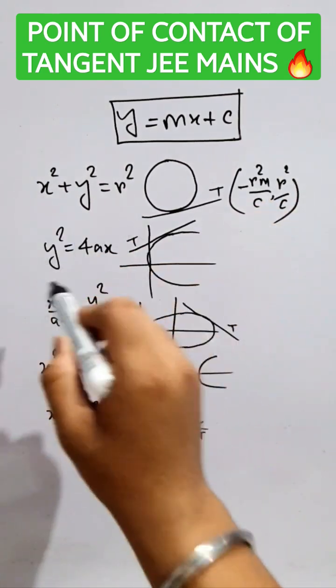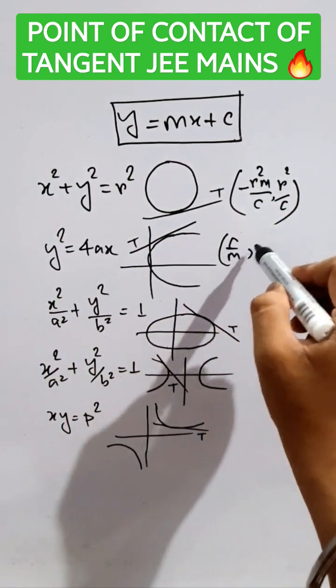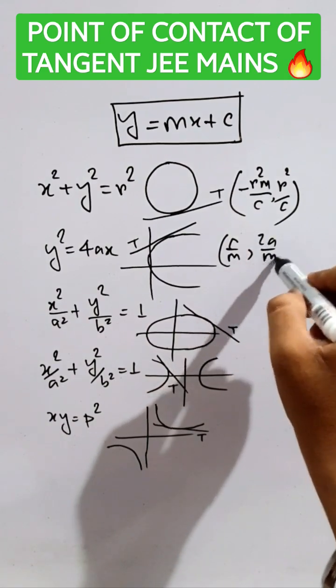Now, for this parabola, it will be C by M, comma, 2A by M.